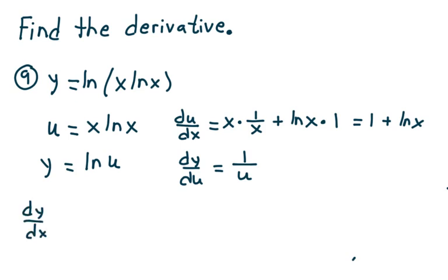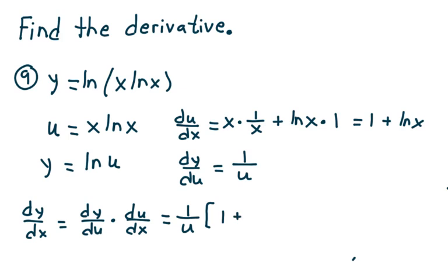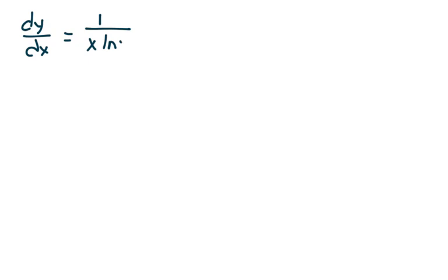dy/dx is equal to dy/du times du/dx — that's the chain rule using Leibniz notation. dy/du is 1 over u, and du/dx is 1 plus the natural log of x. Remember that u is x times the natural log of x, so dy/dx is 1 over x times the natural log of x, times 1 plus the natural log of x. And that's how we do problem number 9.